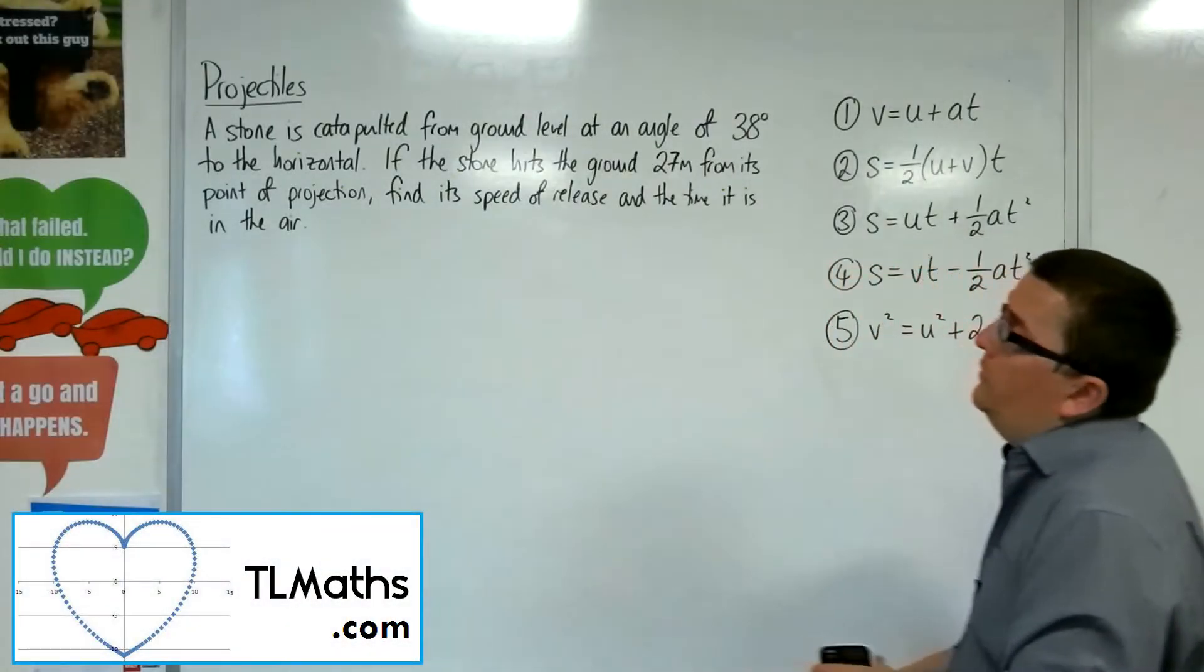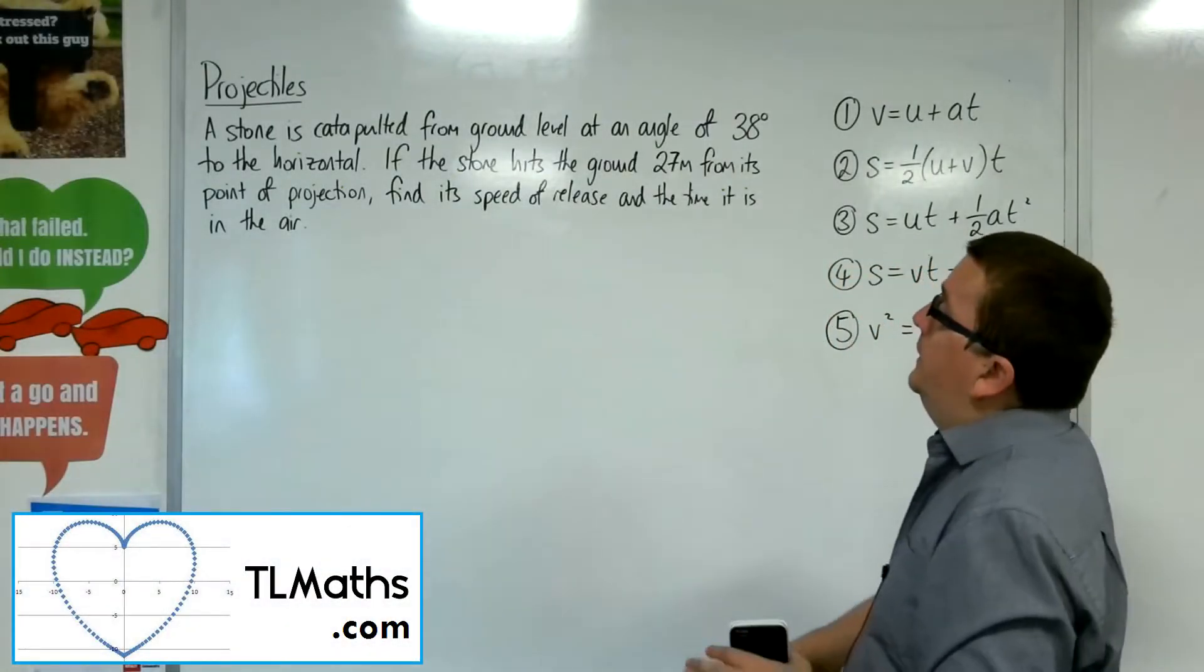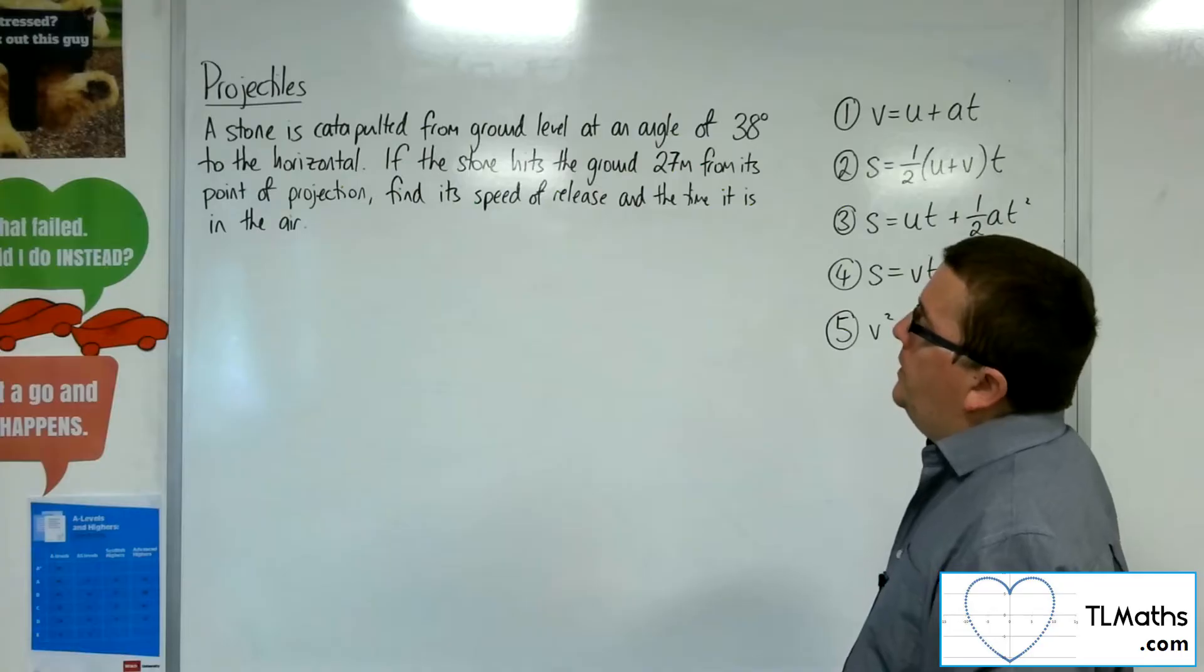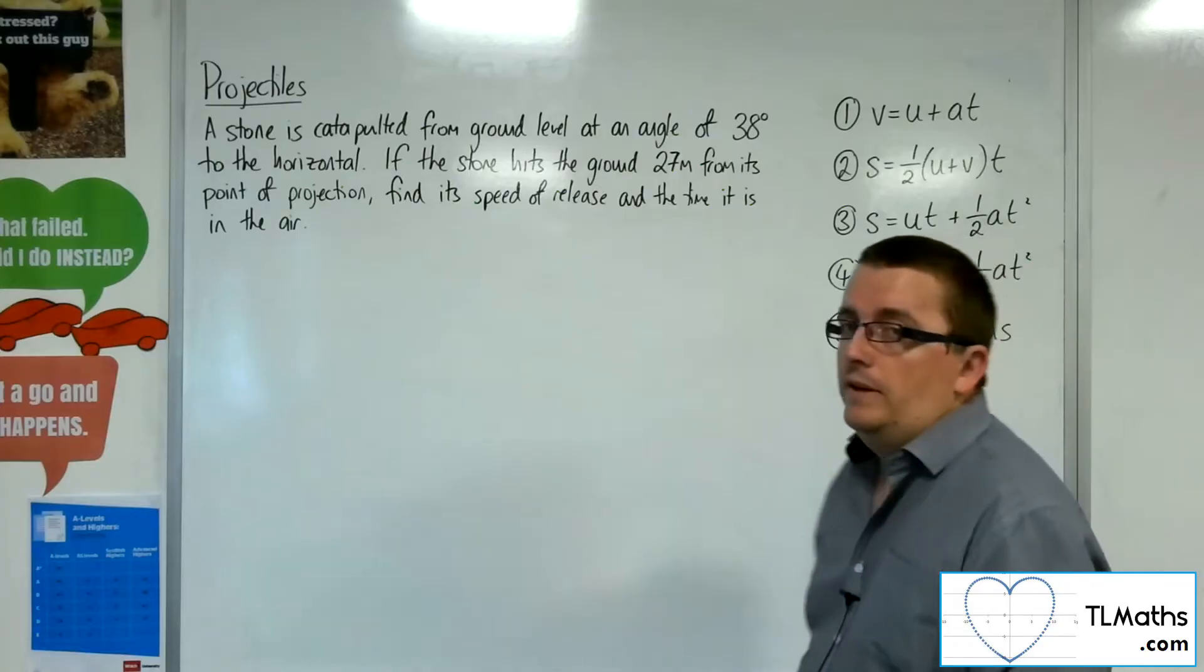So in this problem, a stone is catapulted from ground level at an angle of 38 degrees to the horizontal. If the stone hits the ground 27 metres from its point of projection, find its speed of release and the time it is in the air.